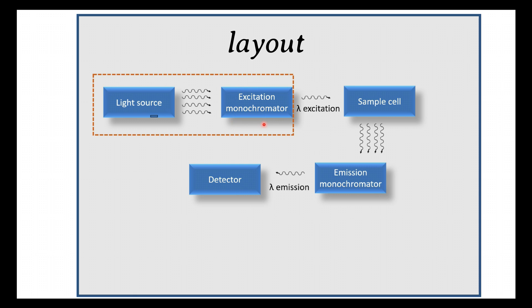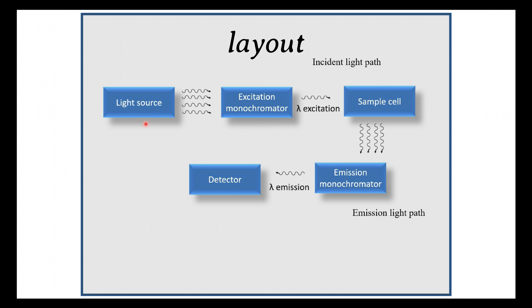Generally, xenon arc lamps are used as the light source, as their high brightness is essential to measure the weak fluorescence emission. The sample is illuminated by the chosen excitation wavelength, which causes it to fluoresce. The emission is collected by the emission monochromator, which is oriented at 90 degrees to the excitation monochromator, and the selected wavelength reaches the detector.